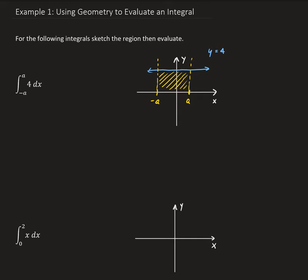So that is the region, and that area is going to give us our value for the integral. We're going to have base times height. For the base we have 2a, and for the height we have 4. So this gives us the value of 8a. That is the solution for this integral.